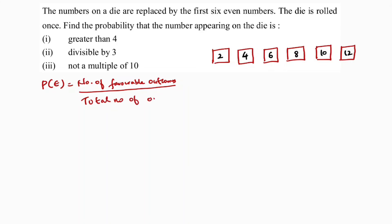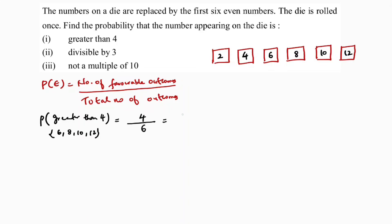First question: probability of a number greater than four. Total outcomes are six. Numbers greater than four from our set are six, eight, ten, twelve — that's four favorable outcomes. So the probability is four by six, which simplifies to two by three.